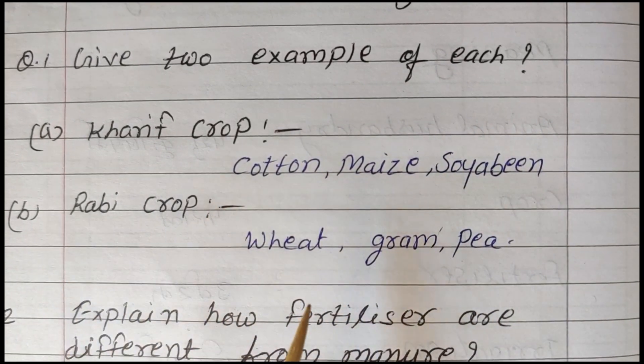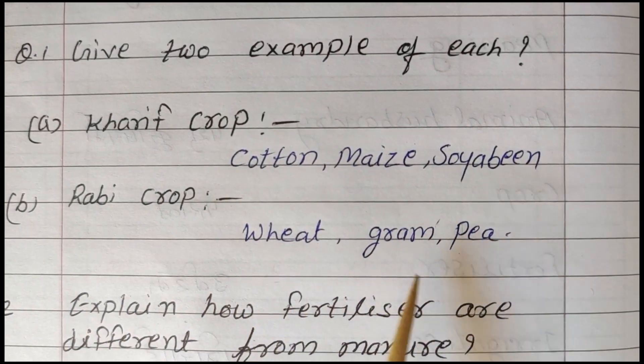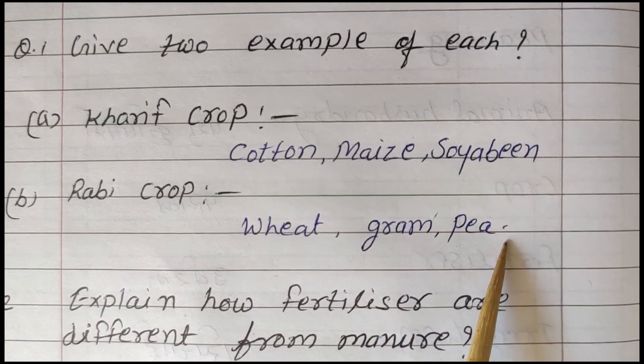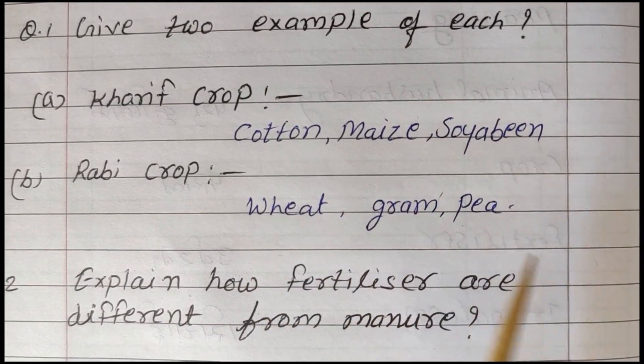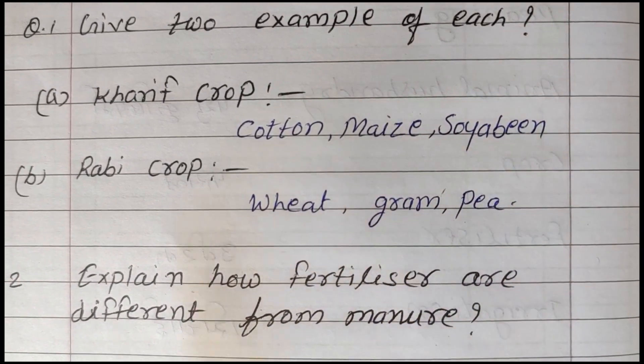Rabi crops — wheat (gehun) and gram (chana) or peas (matar).